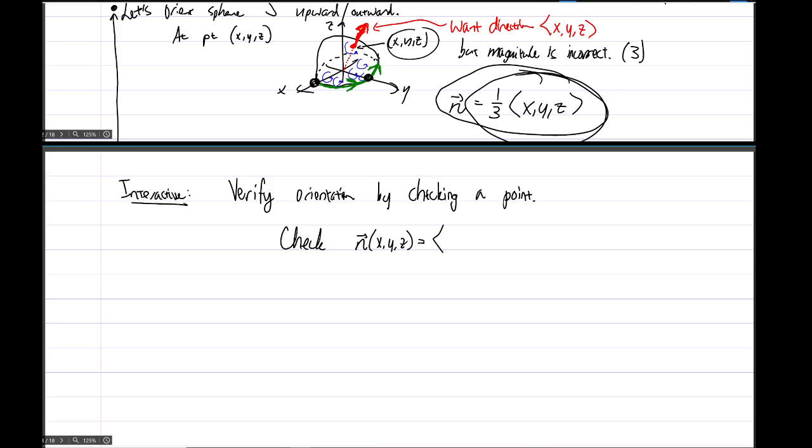So this is going to probably require drawing a picture. What I mean is check that the n of x, y, z equals x over 3, y over 3, z over 3 works by picking a specific point, picking a specific point x, y, z on the sphere S, and, you know, drawing a picture, make sure everything really works, and drawing to verify that n points outwards, because we had asked n to point outwards.